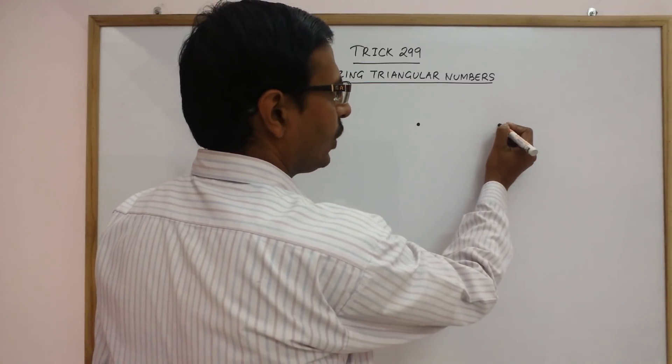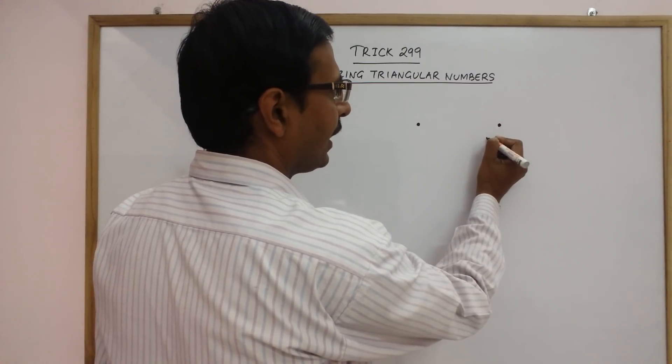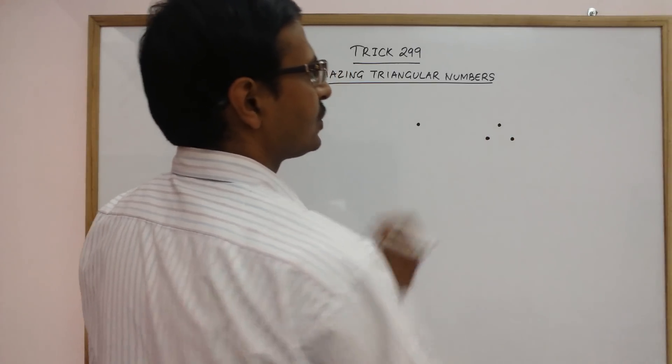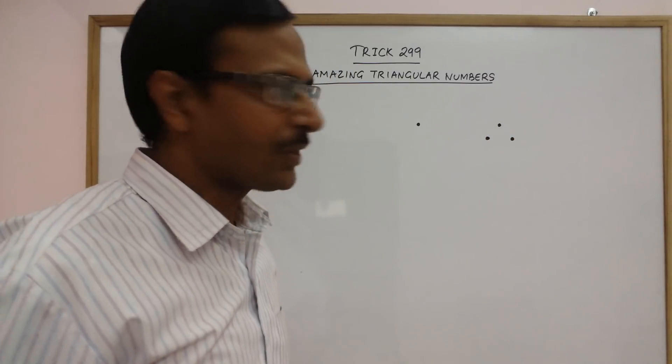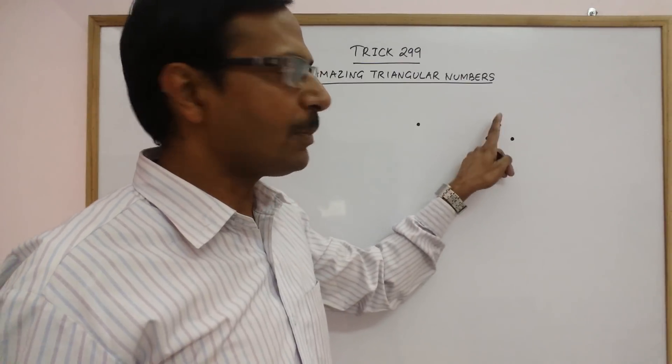I draw 1 dot and under that I draw 2 more dots like this. So, now there are 3 dots and this is in the shape of a triangle.